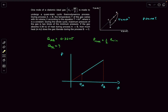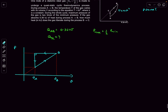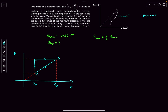From the PV diagram, process B to C appears as a straight line through the origin meaning T ∝ V, which gives constant pressure — so B to C is isobaric. Process C to A is clearly isochoric (constant volume). This completes the triangular PV diagram with vertices at A, B, and C.